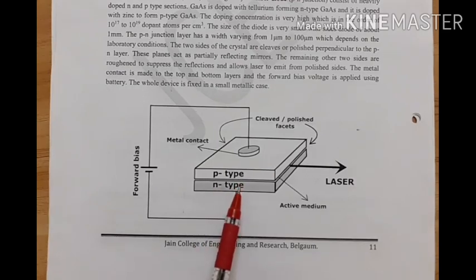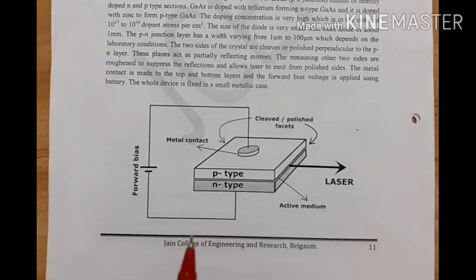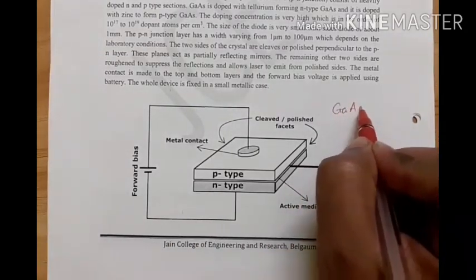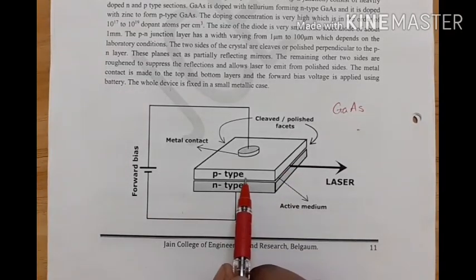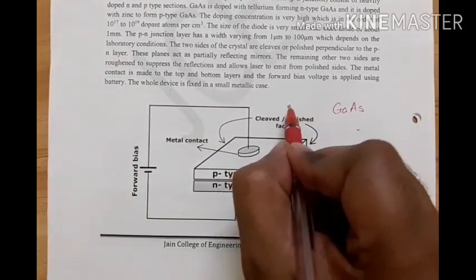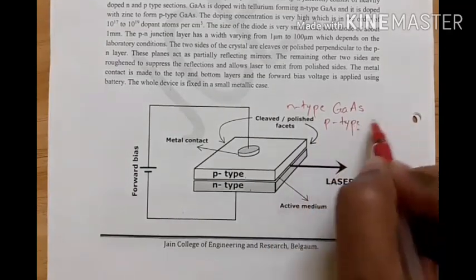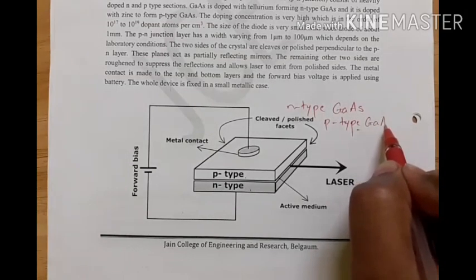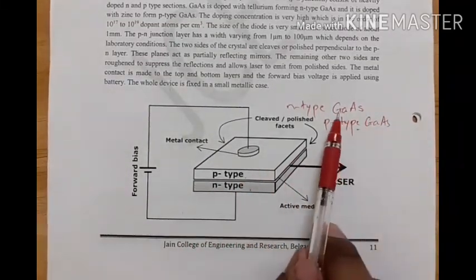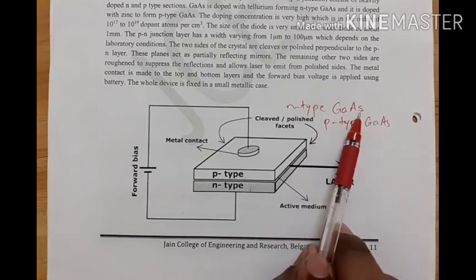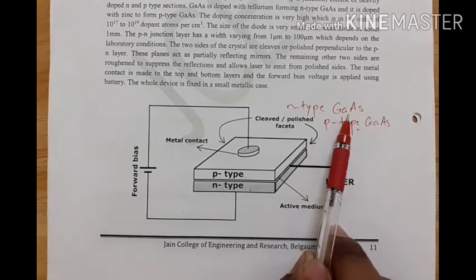Here we take heavily doped p-type and heavily doped n-type gallium arsenide material. Gallium is one material and arsenide is another; the composite gives us the gallium arsenide semiconductor.